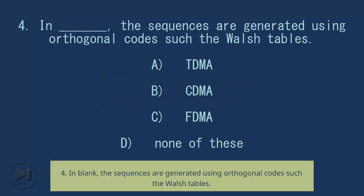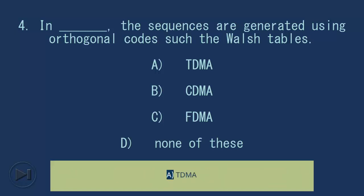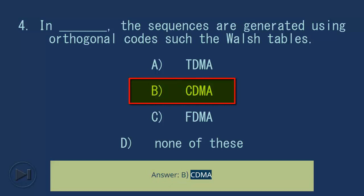Question 4: In blank, the sequences are generated using orthogonal codes such as the Walsh tables. A) TDMA, B) CDMA, C) FDMA, D) None of these. Answer: B) CDMA.